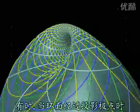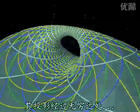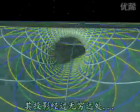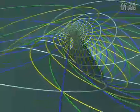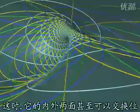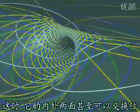Sometimes, when the torus passes through the projection pole, the surface becomes infinite. In this movement, the two faces can even be switched.